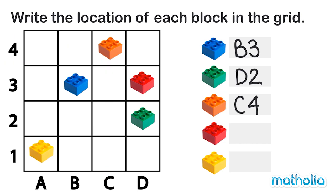Next the red block. The red block is in column D and row 3. The red block is in position D3.